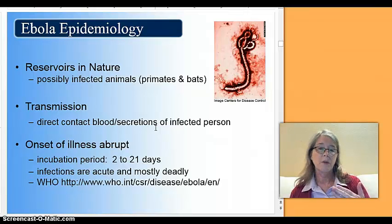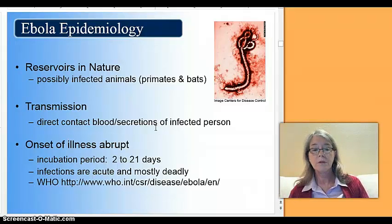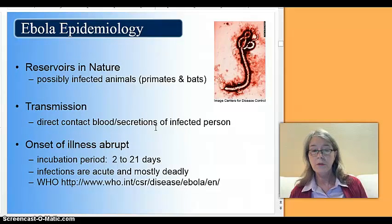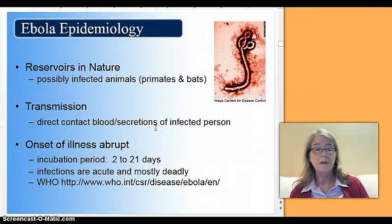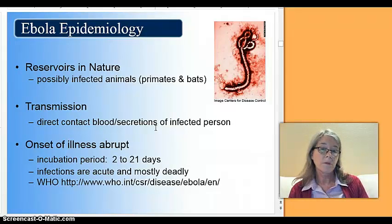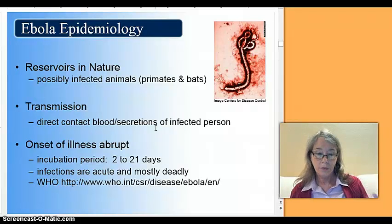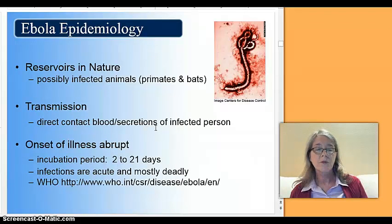Transmission is through direct contact with blood or secretions from an infected animal to a human. Bats and monkeys are part of the food sources for people in many parts of Africa — they hunt these animals just like we hunt deer or other forest animals. When they're hunting and killing these animals, the blood gets on them.